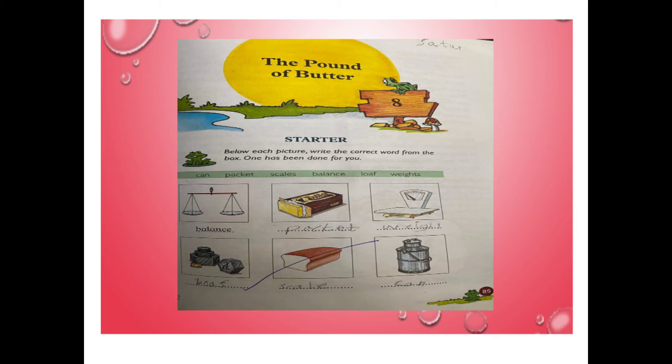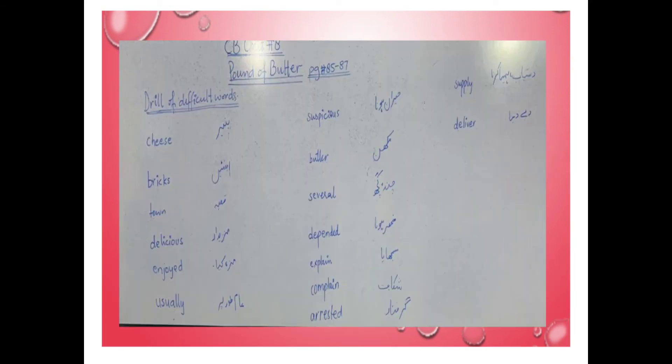You can see a can — like the motorcycle can of your milkman which is hung in your house. Usually it is hung in it. After this, please write the things over there quickly, and after this we are going to drill the difficult words of this unit.